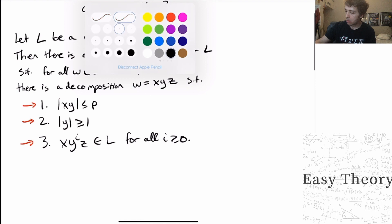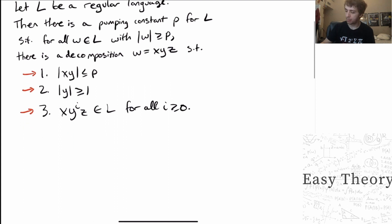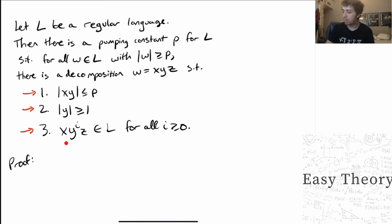Where do we get these conditions from? It turns out we get them from the proof of the pumping lemma. The pumping lemma says that for any regular language, there's a pumping constant p such that if you pick any string in the language with length at least p, you can break up that string w into three parts such that the first two pieces have length at most p, the middle piece has length at least one, and if you put as many copies of the middle piece as you want into the string — pumping the string — you will always still be in the language.